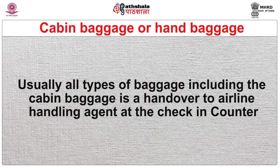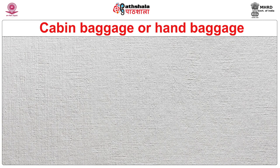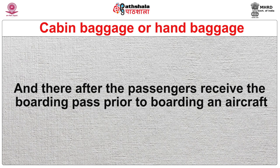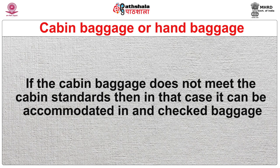In case the carry-on baggage exceeds the free allowance weight or size, then it should be held, checked, and charged accordingly. A traveller prior to boarding an aircraft should be well aware about dangerous goods and other items and be honest enough to convey it to the airline operator. Usually, all types of baggage including cabin baggage are handed over to the airline handling agent at the check-in counter, and thereafter passengers receive the boarding pass prior to boarding. If the cabin baggage does not meet the cabin standards, then it can be accommodated as checked baggage.